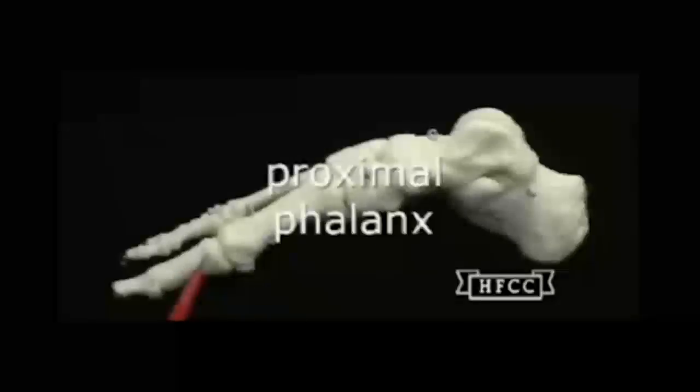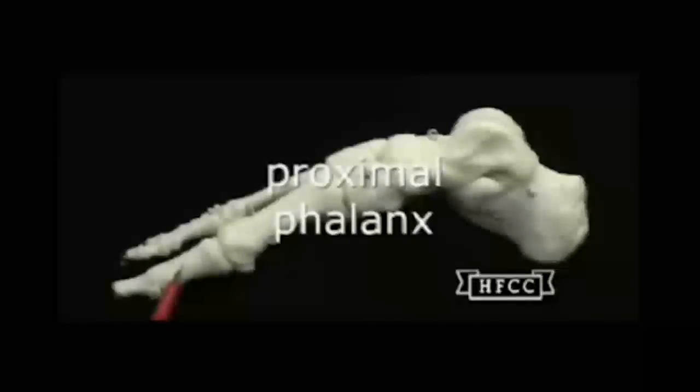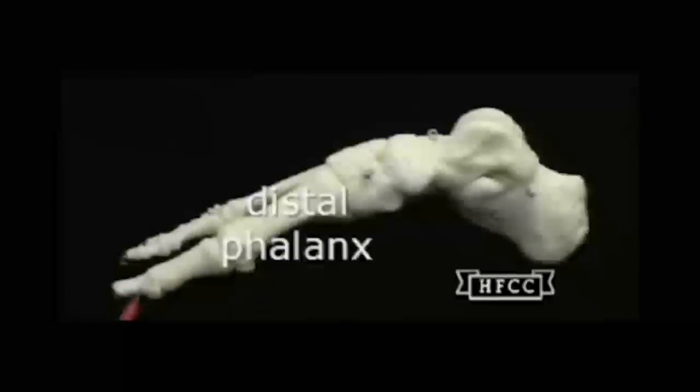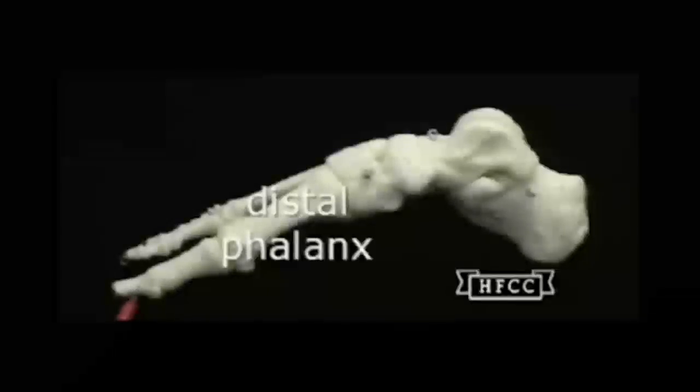And the big toe here with the proximal phalanx. And then the next bone will be the distal phalanx. Missing in the big toe here is the medial phalanx. Whereas toes two through five will have all three, including the medial phalanx bones.